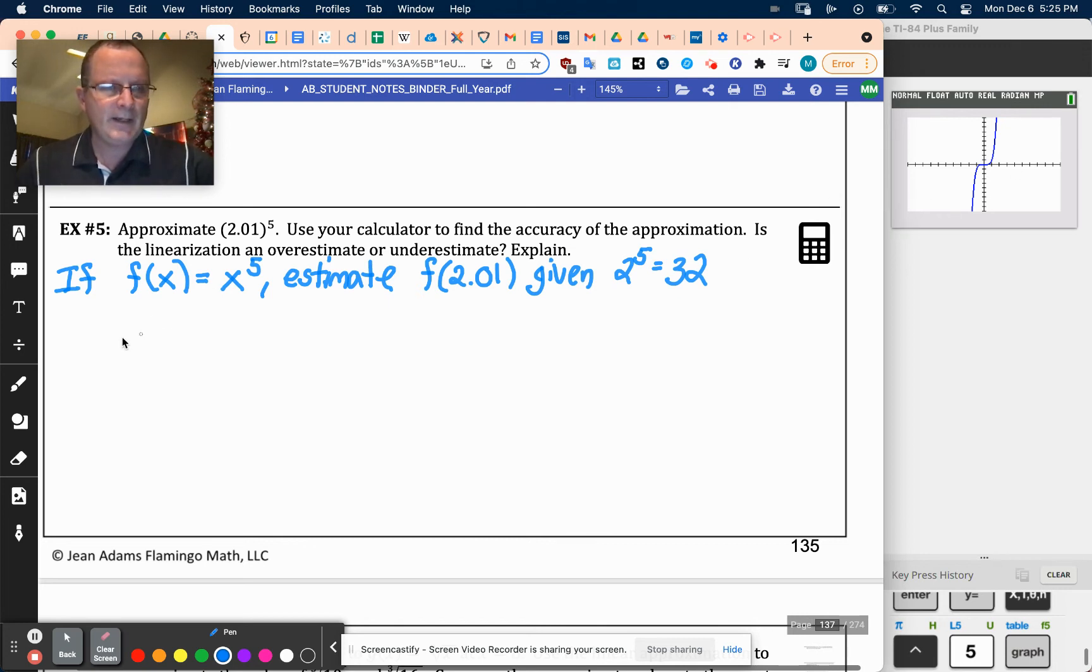So I know then that f of 2.01 would be very close to the linear equation that starts at 32, and has a slope. Well, that's 5x to the 4th, right? So it would be 5 times 2 to the 4th. Has that slope multiplied by the difference in our x's, which is going to be 2 minus 2.01.